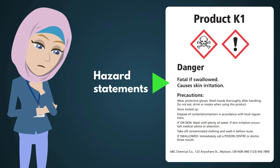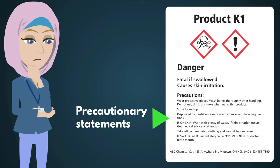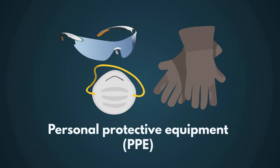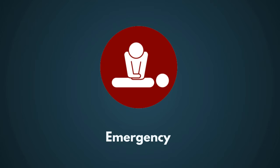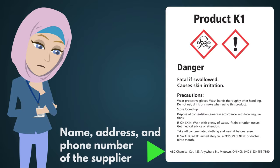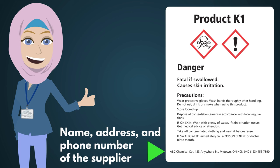Hazard statements tell you what the hazards are. Precautionary statements tell you how to handle and store the product, what personal protective equipment to wear, first aid steps, and what to do in an emergency. The name, address, and phone number of the supplier are also on the label.